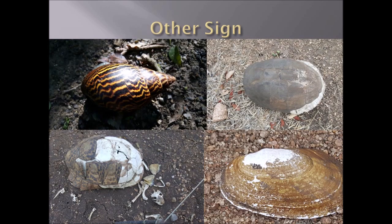Sign might also include shells or parts of animals. Going clockwise from the top left: the shell of a giant land snail Achatina, which can get up to a kilogram in mass; a terrapin shell; a freshwater clam; and finally a leopard tortoise that was electrocuted on an electric fence.